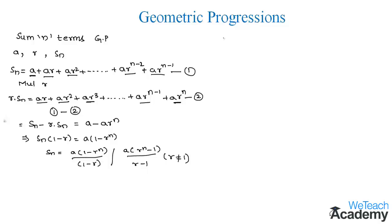When r is equal to 1, the sequence becomes a, a, a, and so on up to n terms. Here we get the sum of n terms just by multiplying a for n terms, so the sum equals n times a.